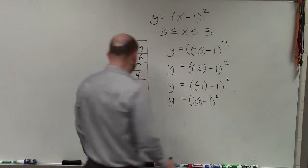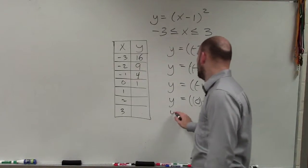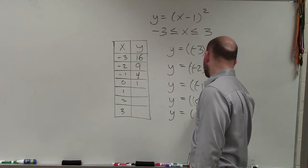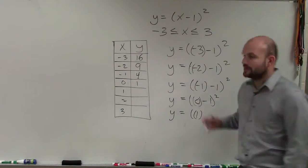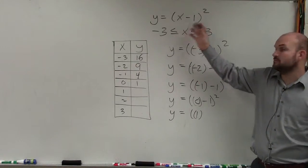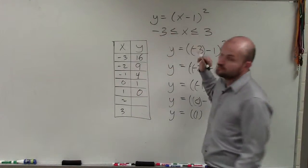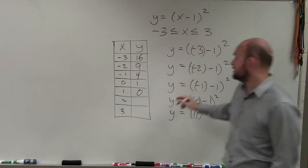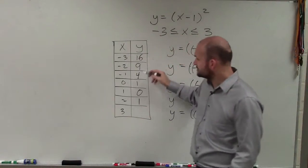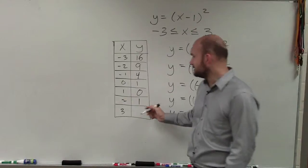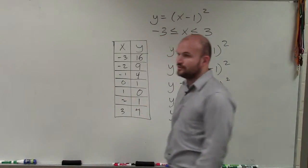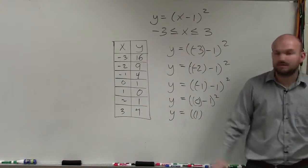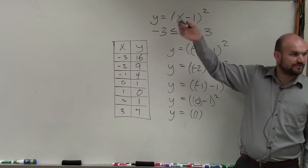And then if I do y equals 1. Actually, let's just do these in your head. 1 minus 1 is 0. 0 squared is 0. 2 minus 1 is 1. 1 squared is 1. And what you guys can see is this actually is going to start repeating itself. And I could check my work, but I know that the answer right there is going to be 4.